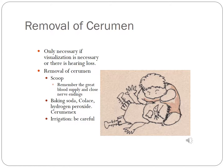Removal of cerumen is not necessary unless you need to visualize the tympanic membrane or suspect it's causing hearing loss. Removal can be done with a scoop, but the further into the canal you go, the closer the nerve endings and blood supply, and it will be very painful. You can irrigate with baking soda solution, Colace, or hydrogen peroxide. Ceruminex is available over the counter and works well, but it's very drying, causing the canal to produce more cerumen — a vicious cycle. If you irrigate, don't use high pressure; it can rupture the tympanic membrane.